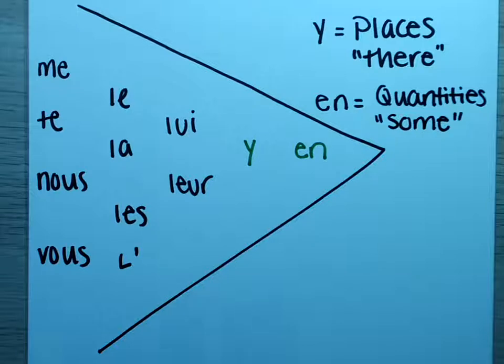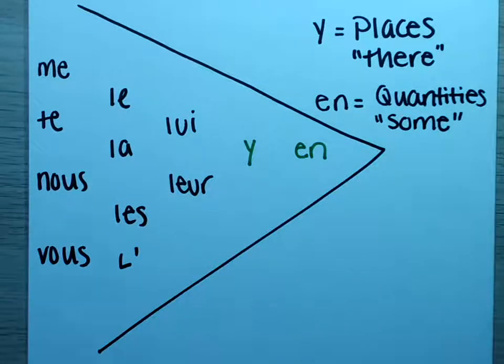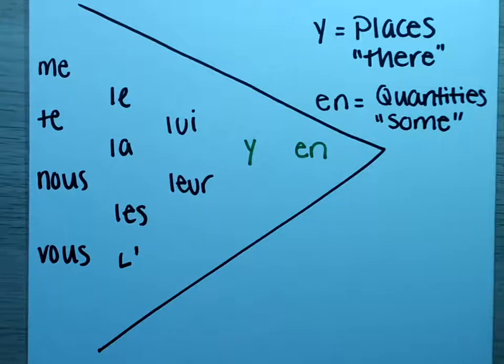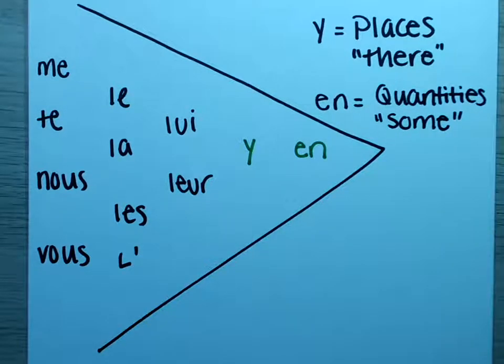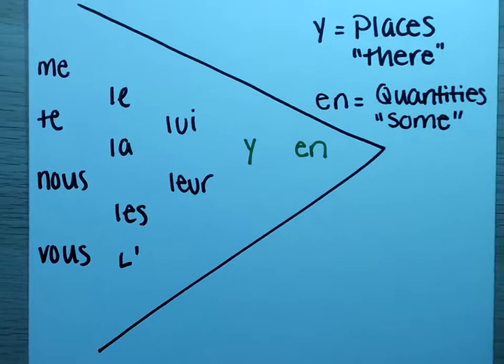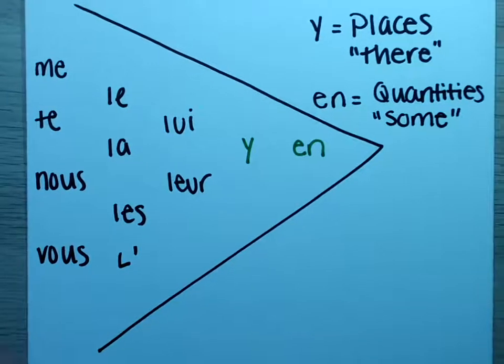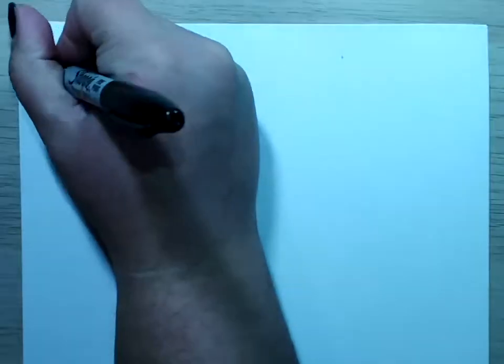Now that we have our full triangle of pronouns completed, let's talk about what it looks like in the passé composé. It's quite easy. I'm going to switch my paper to get a new blank canvas. The main thing to remember with pronouns in the passé composé is that they're going to go before your helping verb.